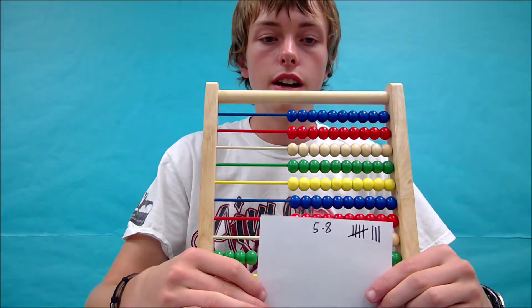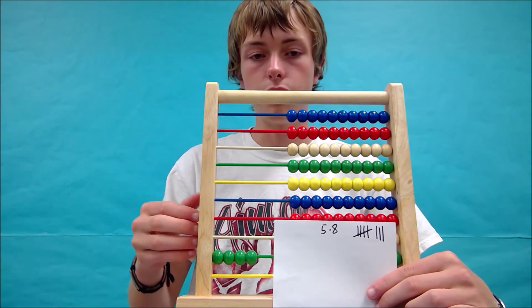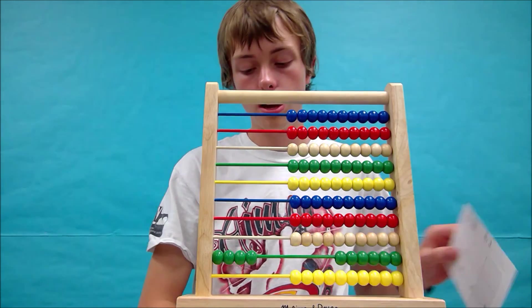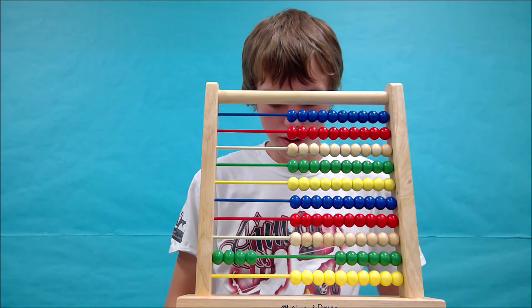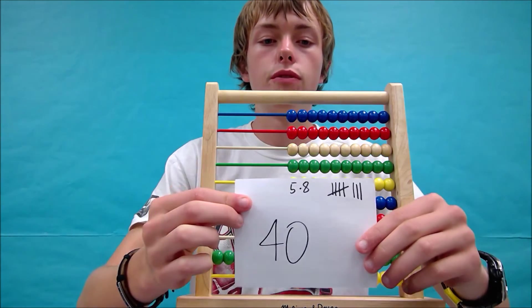This gives us our number because we have 8 tallies, and so we have our number over here on the abacus, which I will write out. But you can probably already see that the answer is 40.